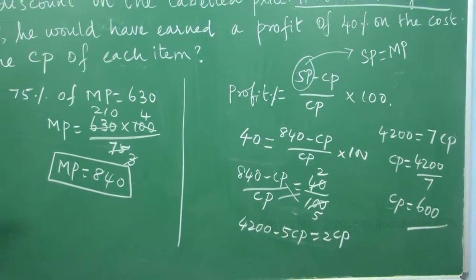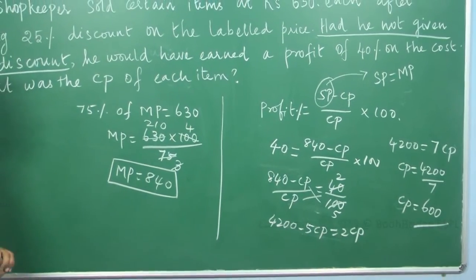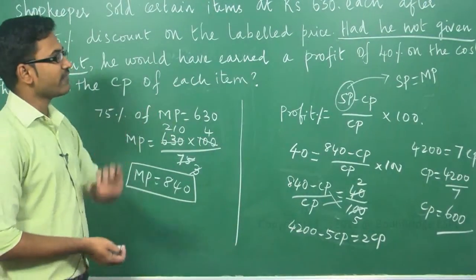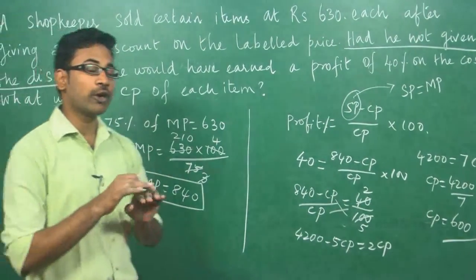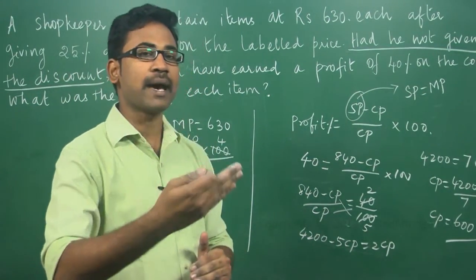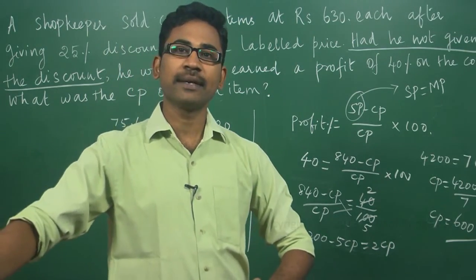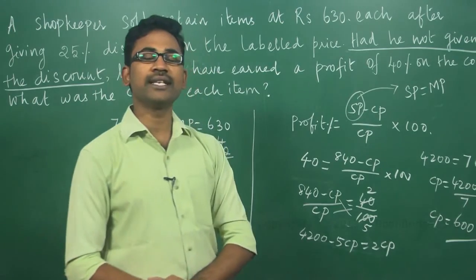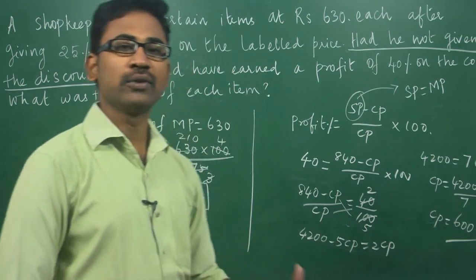And in this question, finally the important thing you have to take notice. Here, you have to search for selling price. That is given as, they had not given discount. They had not given discount in the sense, whatever the market price, they are making it as a selling price. So in place of selling price, that's why we are substituting the market price. This is about this problem.